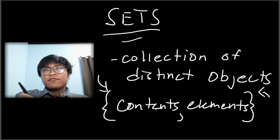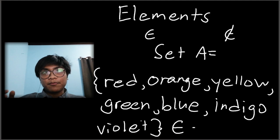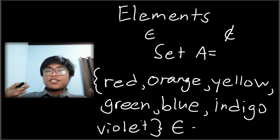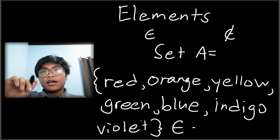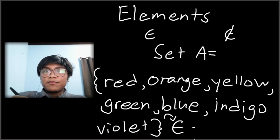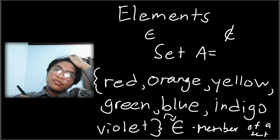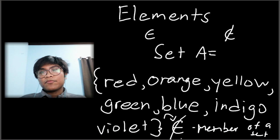Elements are objects that belong to a set. Each element or member of a set is separated by a comma and enclosed with curly brackets. The symbol ∈ means 'is an element of,' signifying that an element is a member of a set. If you put a slash through it, it denotes that it is not a member of that set.